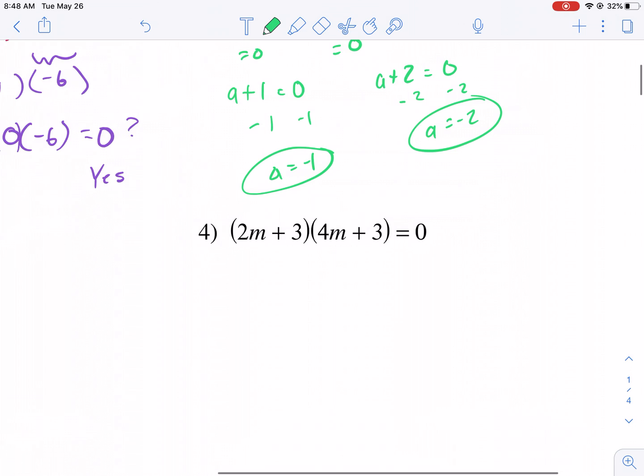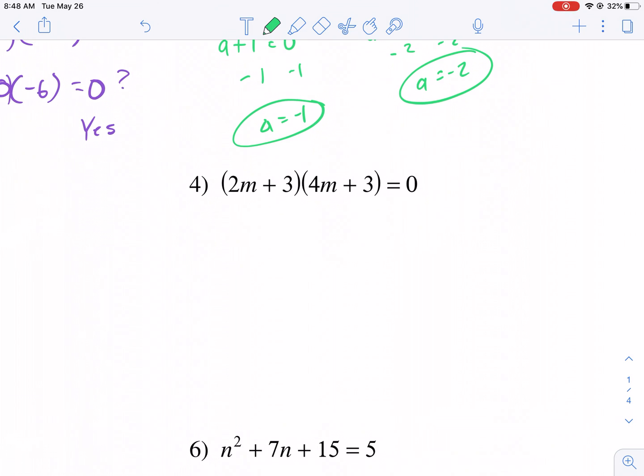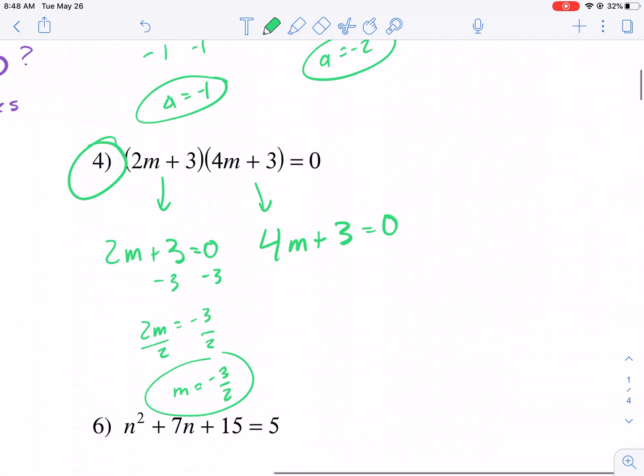Some of these look a little bit more complicated. For some reason, this problem really trips up a lot of my students, but it's the same process. It's just a two-step equation, but we have two of them, and we have two answers. So we set them both equal to 0. If it equals 0, it will make a true statement because anything times 0 will equal 0. So we do 2m equals negative 3, divided by 2, m equals negative 3 over 2. Yes, you can have a fraction as an answer.